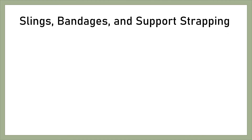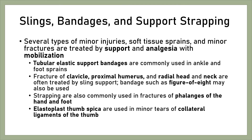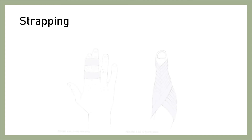Slings, bandages, and support strapping: Several types of minor injuries, soft tissue sprains, and minor fractures are treated by support and analgesia with mobilization. Tubular elastic support bandages are commonly used in ankle and foot sprains. Fractures of the clavicle, proximal humerus, and radial head and neck are often treated by sling support. Bandages such as figure-of-eight may also be used. Strapping is also commonly used in fractures of the phalanx of the hand and foot. Elastoplast thumb spica are used in minor tears of the collateral ligaments of the thumb.